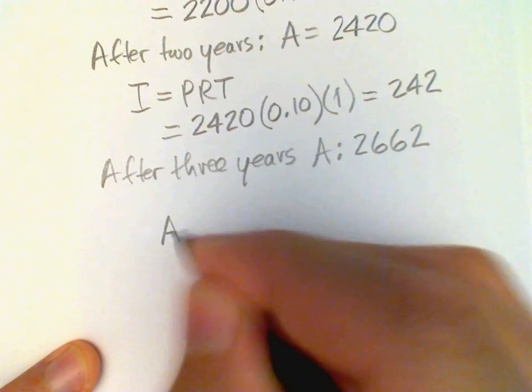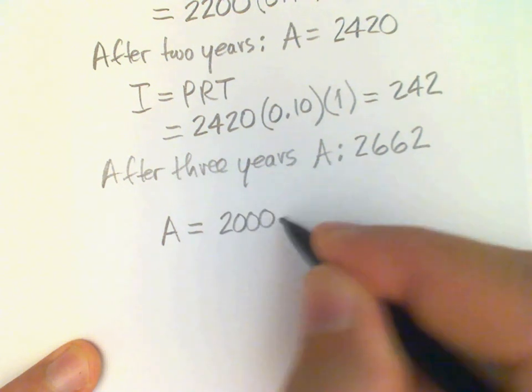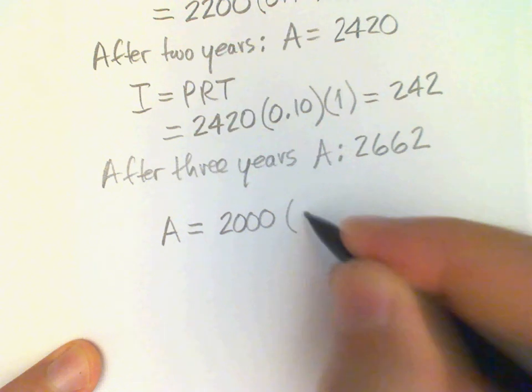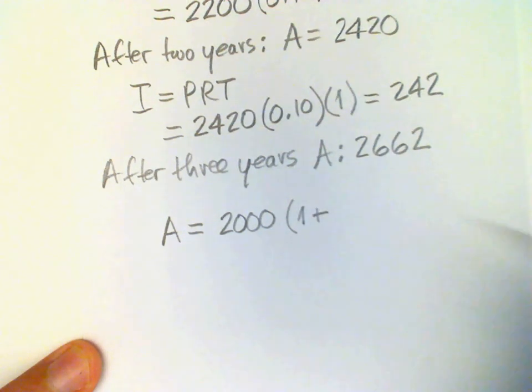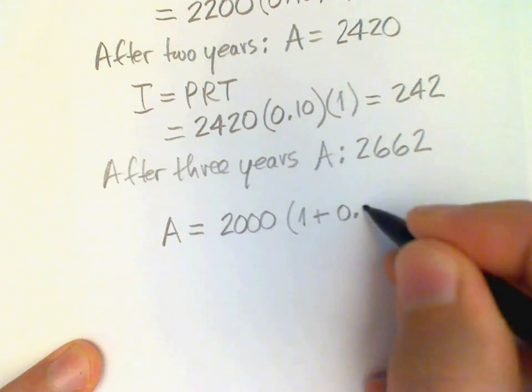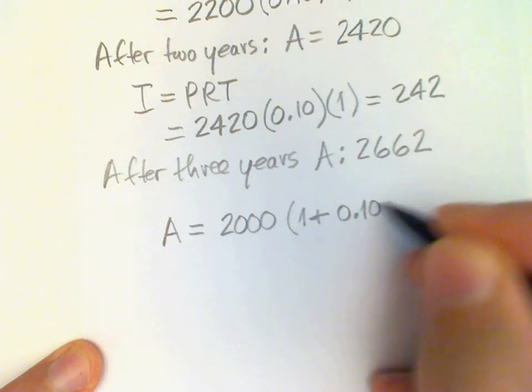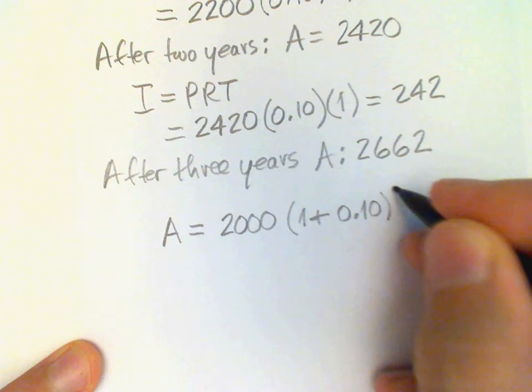We have A equals P which is our original 2,000, and then we have 1 plus, and our i is 0.10. Then we have to raise that to the third power.